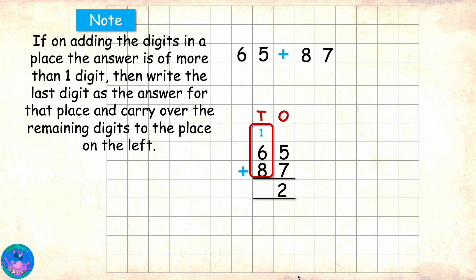Yes. Now, coming to the tens place. Here we have 1, 6 and 8. 1 plus 6 is 7 and 7 plus 8 is 15. And 15 is once again a two-digit number. So, we will write the last digit 5 as the answer for the tens place. And what do we do with the remaining digit 1? We carry it over to the place on the left of the tens place. That would be the hundreds place.